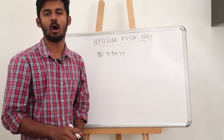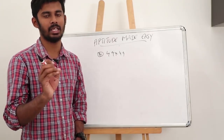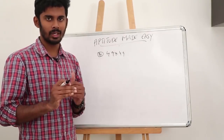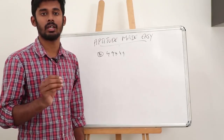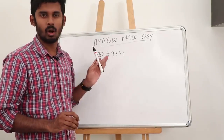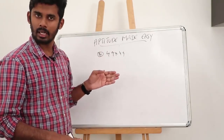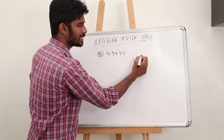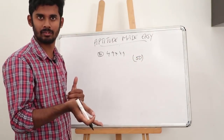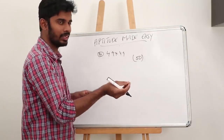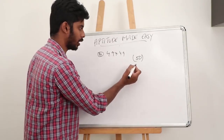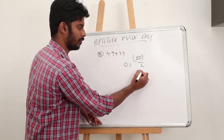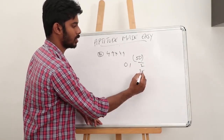Now I'm going to explain how to get squares of numbers between 25 to 50 in very short time — in about five to six seconds. To use this, you should know squares of numbers up to 21. For example, 49 squared: the reference number is 50. How close is 50 to 49? Only 1. So 1 squared is 01. And 50 divided by 2 is 25, minus 1 is 24. So 49 squared is 2401.